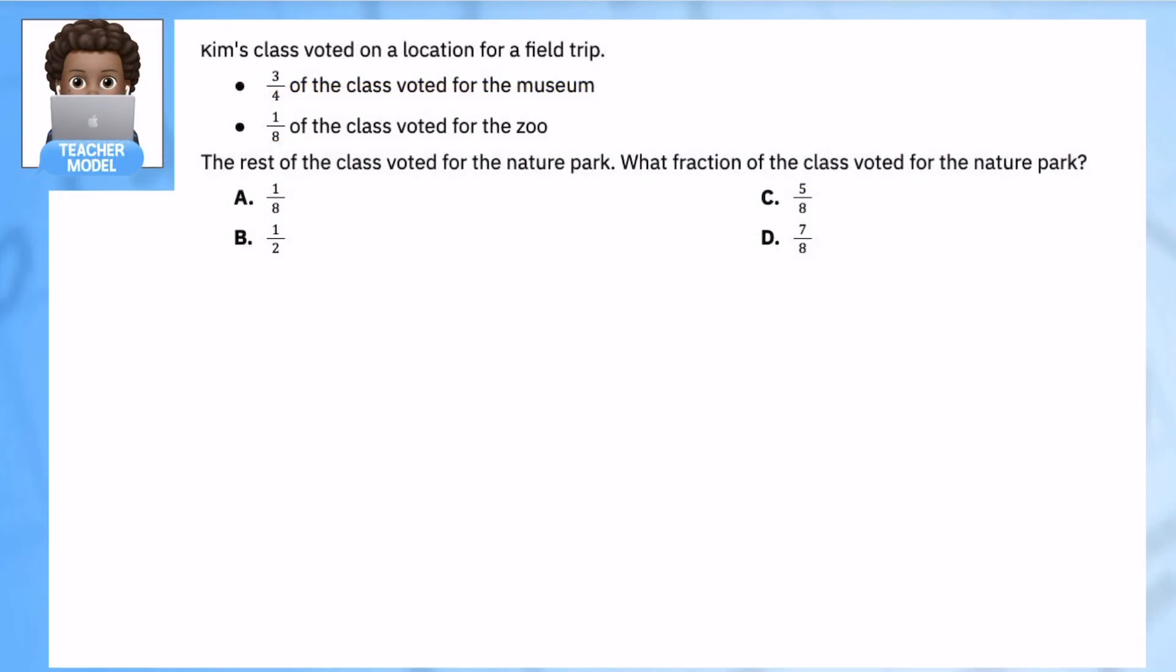Here's our last part, the guided practice. I'm going to read it with you and then you're going to hit pause to try it on your own and then unpause to see if our work matches. Kim's class voted on a location for a field trip. Three fourths of the class voted for the museum, one eighth for the zoo, the rest of the class voted for the nature park. What fraction of the class voted for the nature park? So it's the same type of model we had before where we have three fourths, one eighth, and some number we do not know.